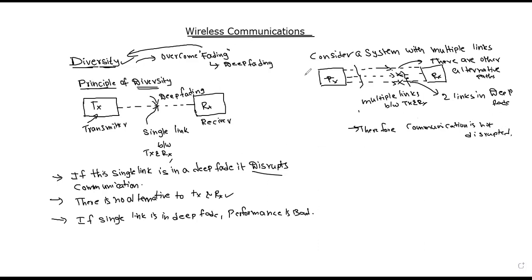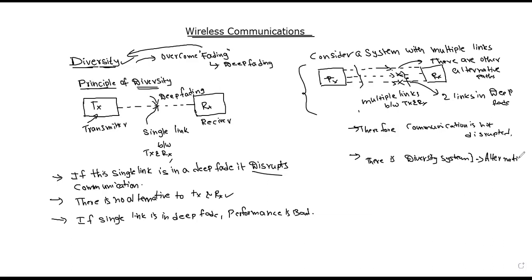This is related to multipath propagation processing. In a diversity system, there are alternative paths available. Looking at these alternative paths, this is the principle of diversity.